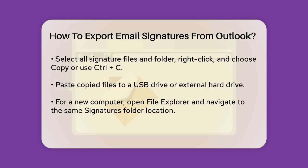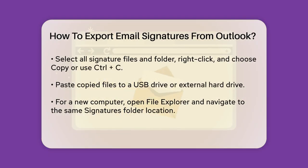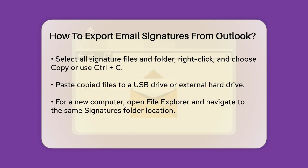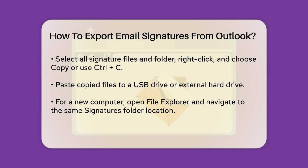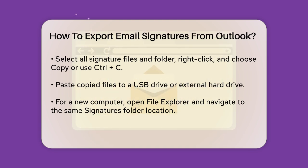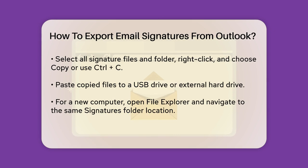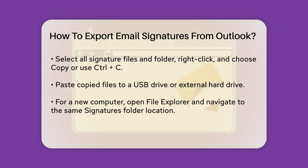Once you're in the Signatures folder, you'll see three files for each signature you've created: one with a .htm extension, one with a .rtf extension, and one with a .txt extension, along with a folder with the same name as your signature. You need all these files and the folder to export your signature correctly.